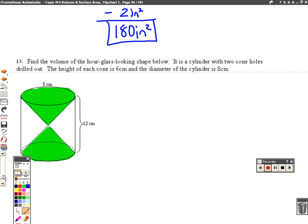Alright, last but not least. Find the volume of the hourglass shaped looking below. It is a cylinder and it has had 2 cone holes drilled out. We want the volume of it. So, the volume is going to equal the volume of the cylinder minus the volume 2 volumes of the cones.